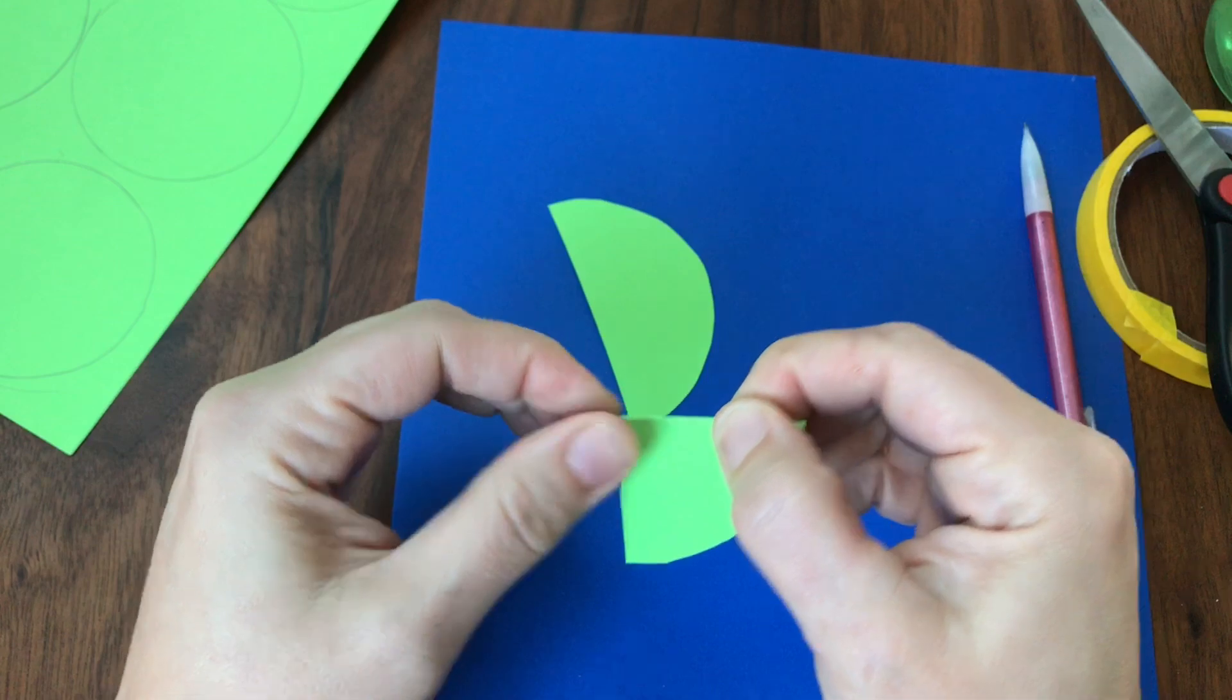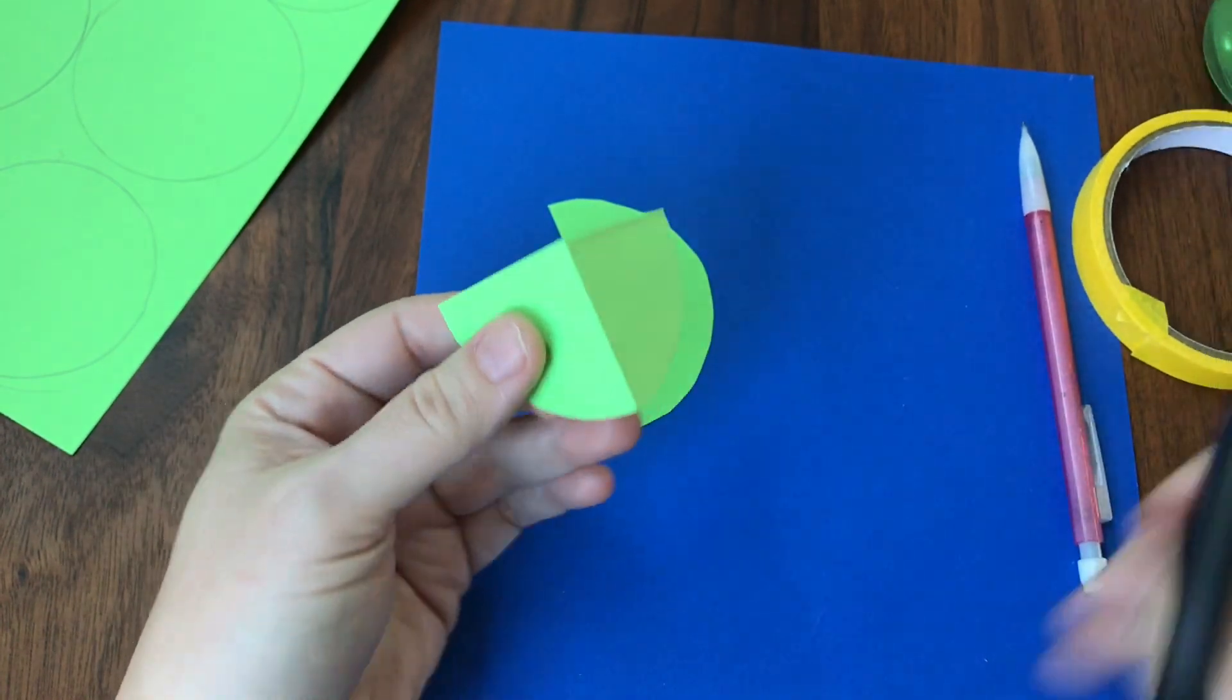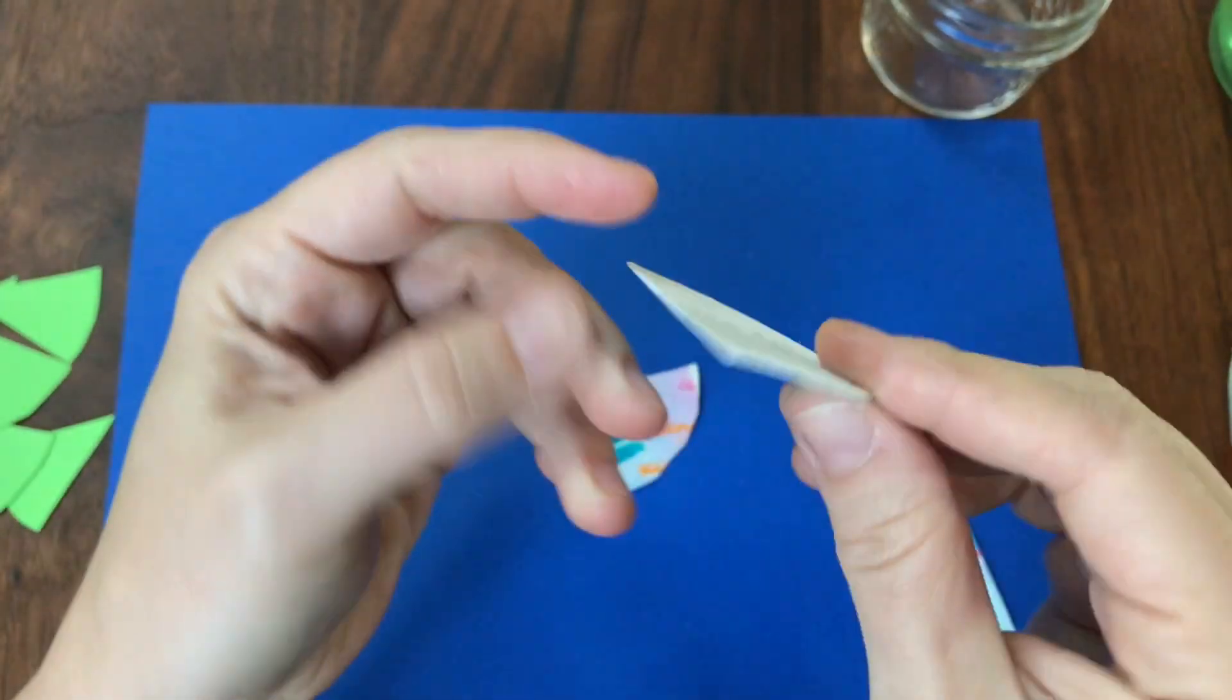I cut it in half and then I folded my halves in half to create quarters. I'm going to cut very slowly and precisely on those folds.